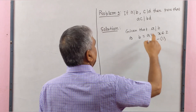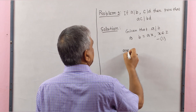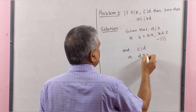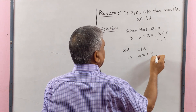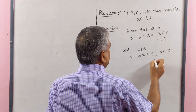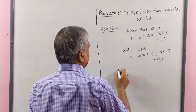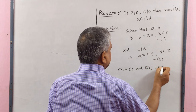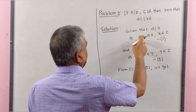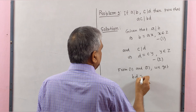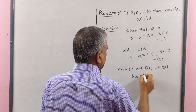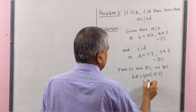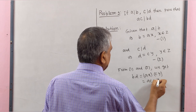Again, given that C divides D implies that D equals CY, where Y is an integer. This is equation number 2. So from equations 1 and 2, we get B multiplied by D equals BD equals AX multiplied by CY, which on the right side equals AC.